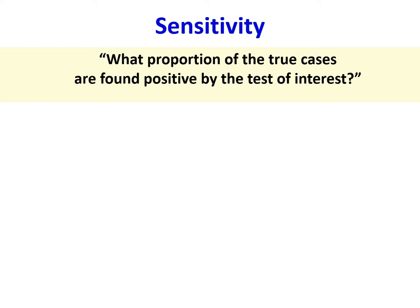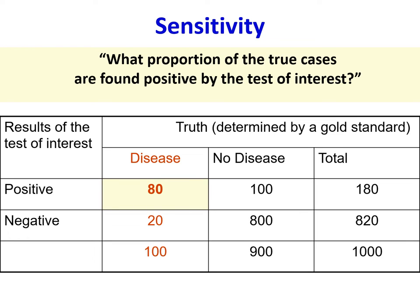Going back to sensitivity: what proportion of the true cases are found positive by the test of interest? There were 100 true cases determined by the gold standard. Of them, 80 were found positive by the test of interest. So sensitivity is 80 divided by 100, which is 0.8 or 80%. When calculating sensitivity, you are always working only with those in the first column — those found to have the disease by the gold standard.